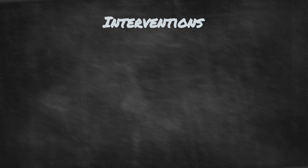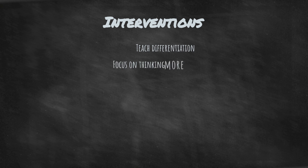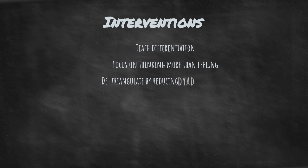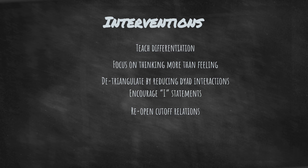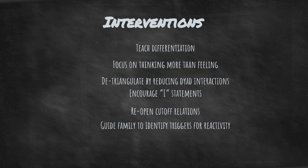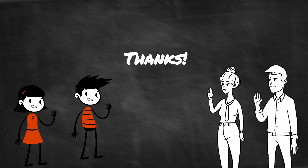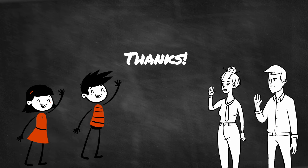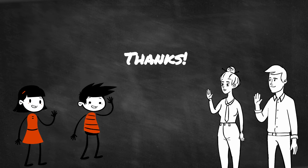Some interventions include teaching differentiation, focusing on thinking more than feeling, de-triangulating by reducing dyadic interactions, encouraging I-statements, reopening cut-off relations, and guiding families to identify triggers for reactivity. That's the end of our brief overview of Bowen Family Systems Theory. Thanks for watching.